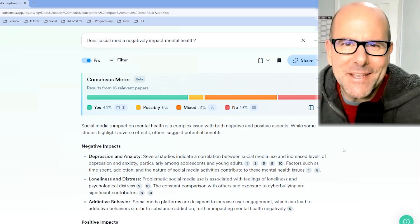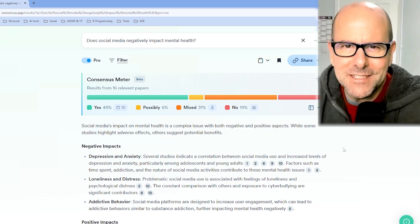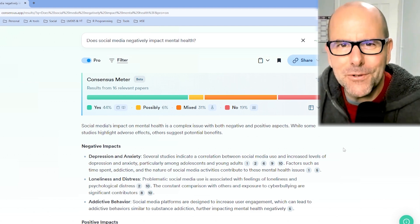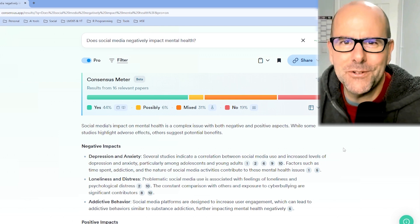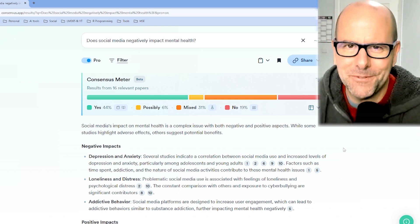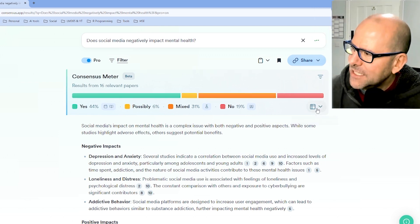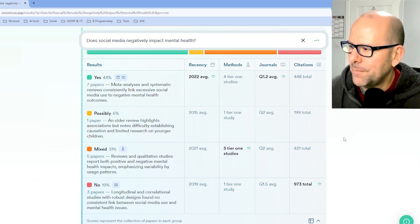ConsenSys not only gives you a snapshot synopsis of what the research says, but it also allows you to look under the hood at the strength of the research that is informing the answer to that question. So if we look at our ConsenSys meter, we can expand it out and look at not just the numbers, but the quality of the papers that contribute to the answers that are given.